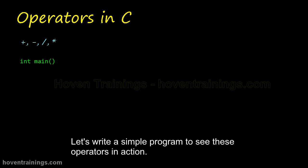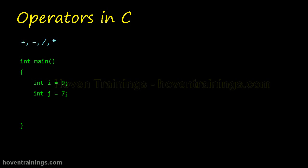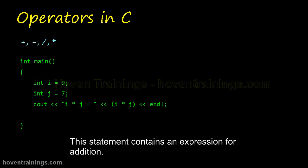Let's write a simple program to see these operators in action. I and J are two variables that store two operands. This statement contains an expression for addition. This is the printed output.